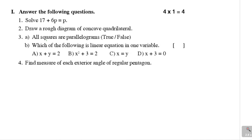First, answer the following questions. In this section, we have 4 problems — all are one-mark questions. Let us see the first problem: Solve 17 plus 6p equal to p. This is the given equation; we need to solve this. Solving means finding the value of the variable which satisfies the given equation. Here the variable is p, so we need to find the value of p.